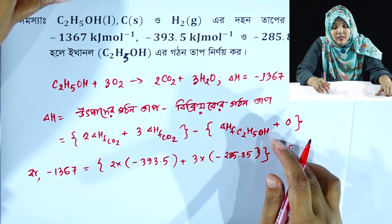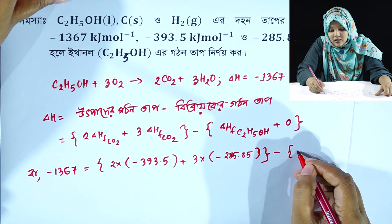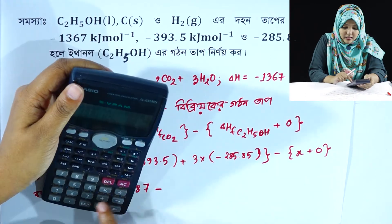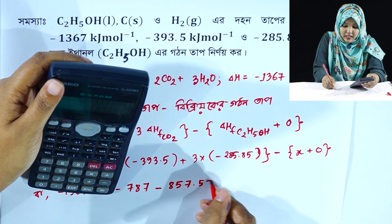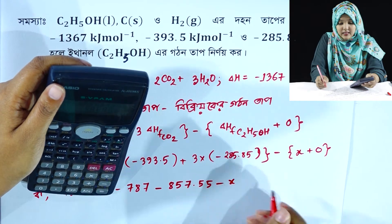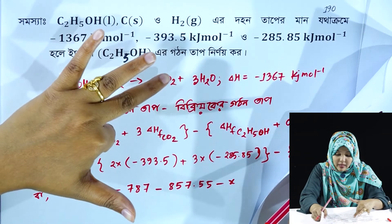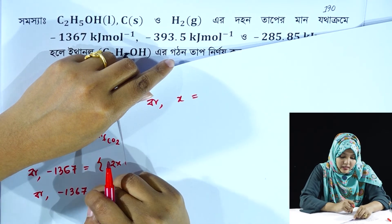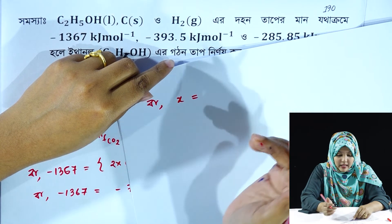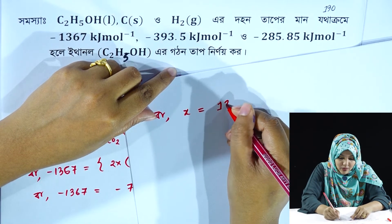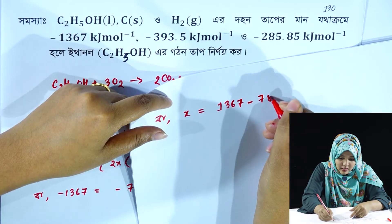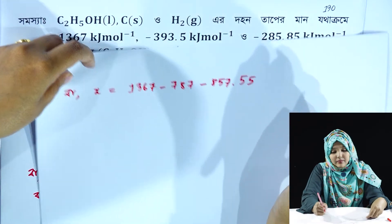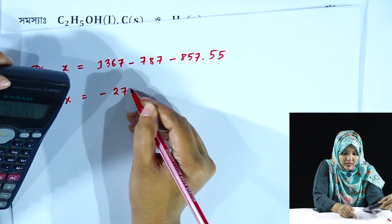Calculating: minus 787 minus 857.55 minus x. So x is equal to minus 787 minus 857.55, giving x equal to minus 277.55.